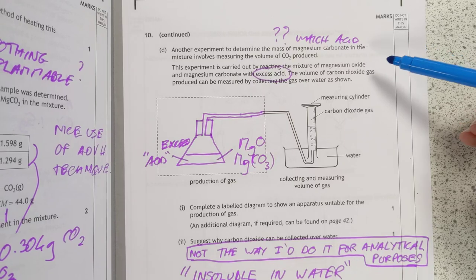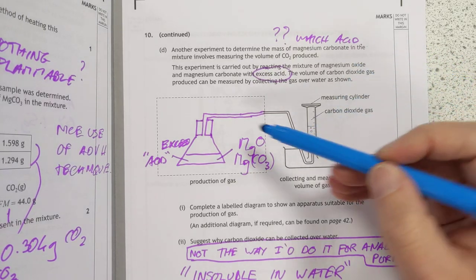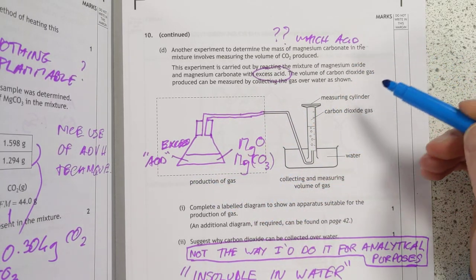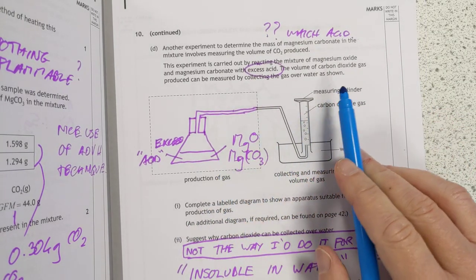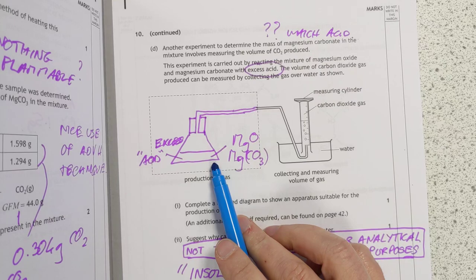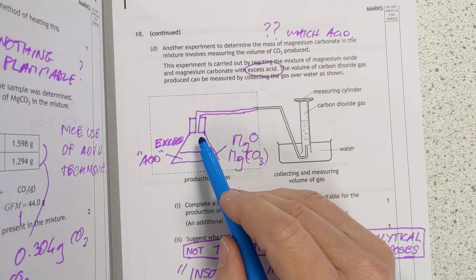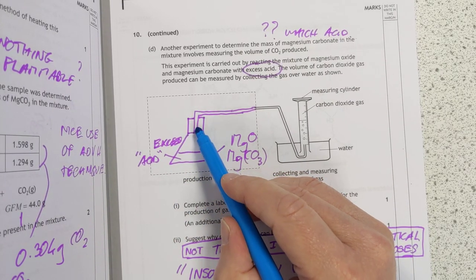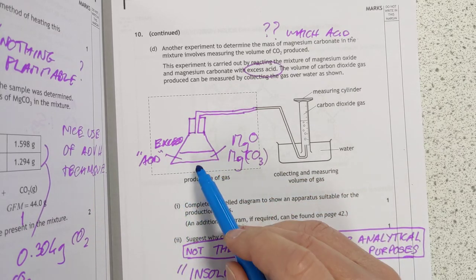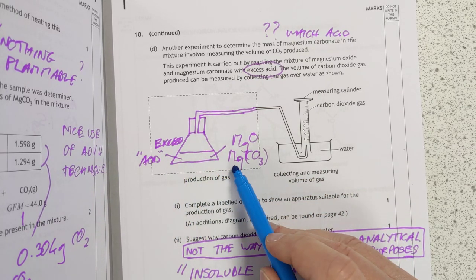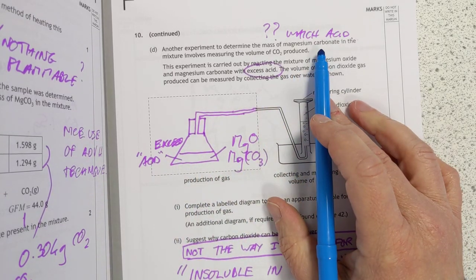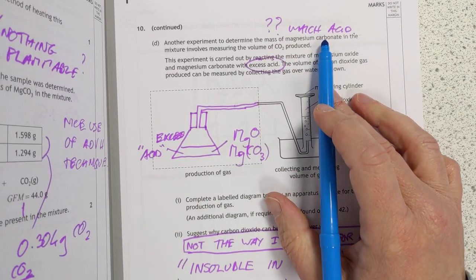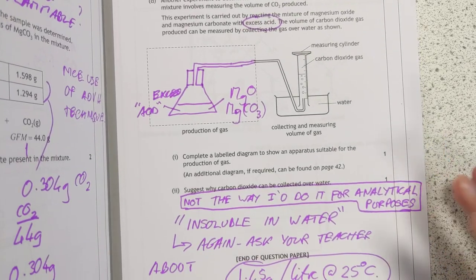Here we go. Another experiment to determine the mass of magnesium carbonate involves... It's a drawing equipment one. It's unusual in that they've given you the end and you have to draw the start, but that's fine. Nothing wrong with that. I would have had a conical flask. You can have a beaker. Any sort of sealed up container. You can't have the seal going through the tube here though. The delivery tube has got to be accessible inside here. And you're supposed to label it. So here's the mixture. It just says excess acid. I couldn't see which acid they wanted to use. Maybe I missed it. Maybe it was earlier on. I did this late at night. I'm sorry.